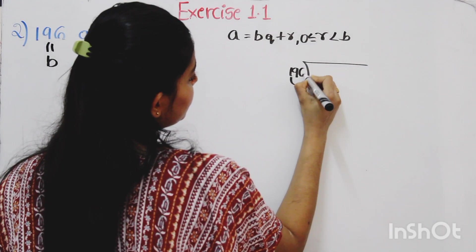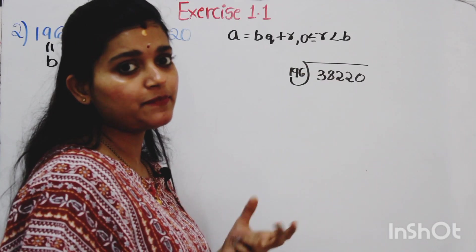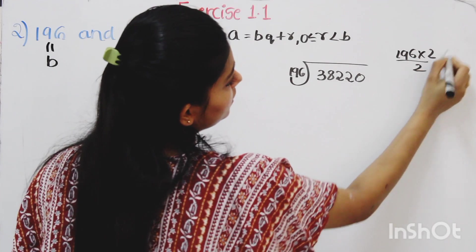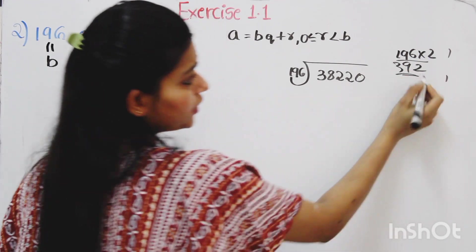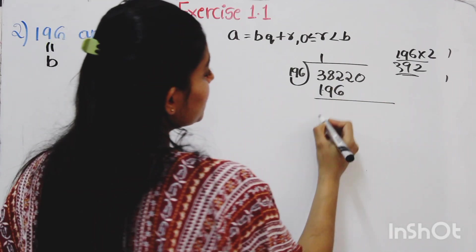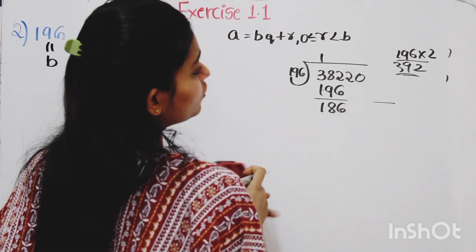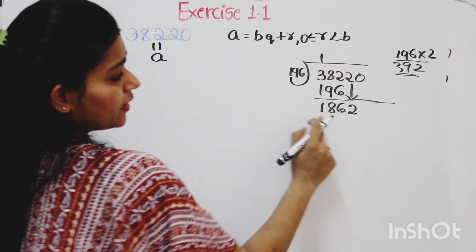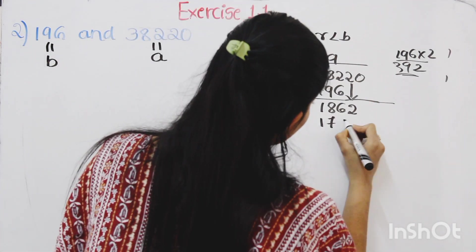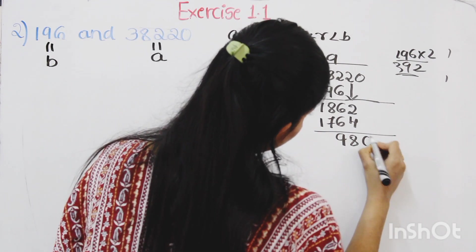While dividing 38,220 by 196: 38,220 is a very large number so we need 3 steps to complete the division. 196 times 1 gives 196, bring down the next digit. 196 nines are 1764, so removing that the remainder at that stage is 980. Bringing 0 down, 196 times 5 is 980, so the remainder is 0.